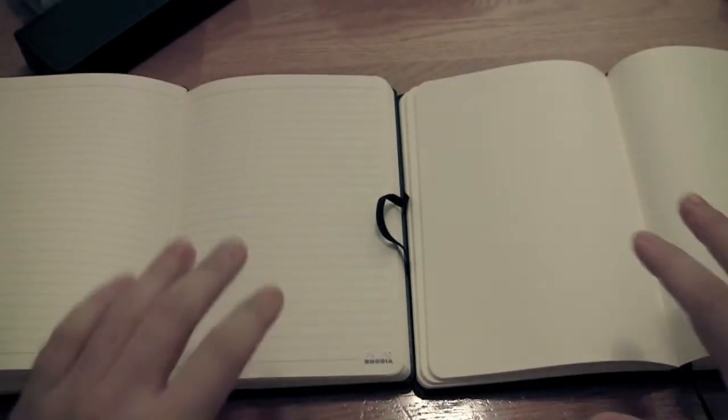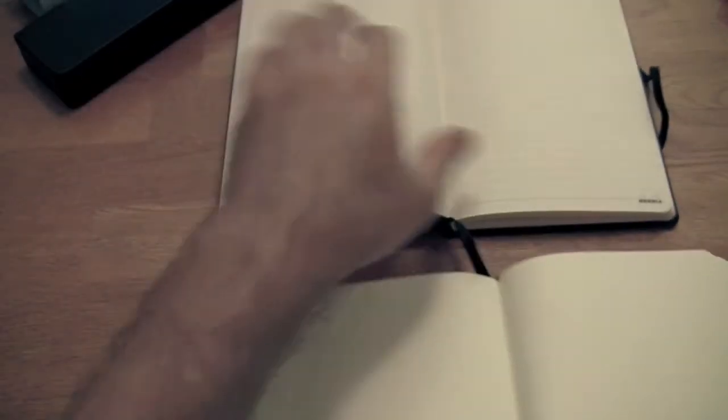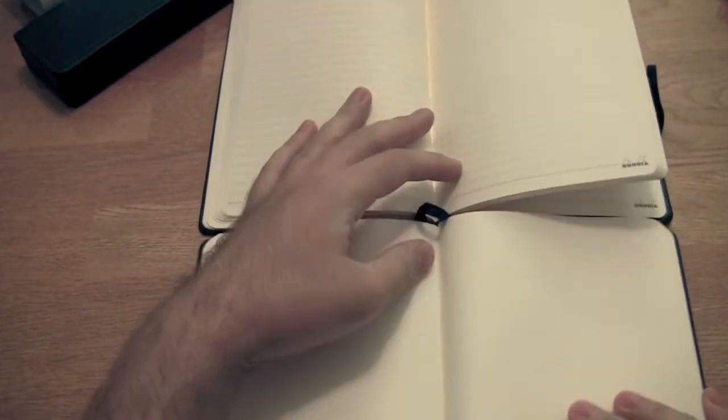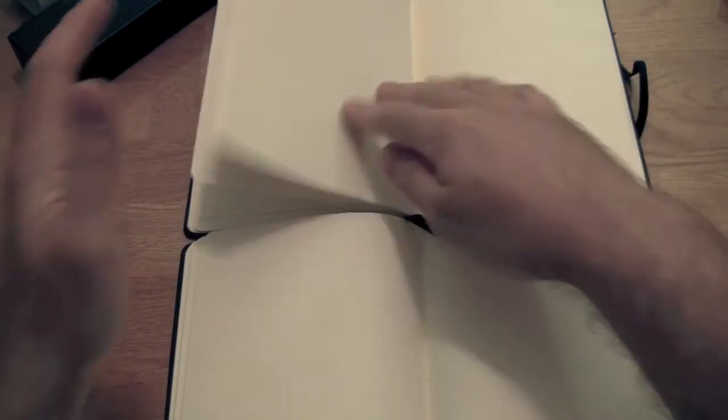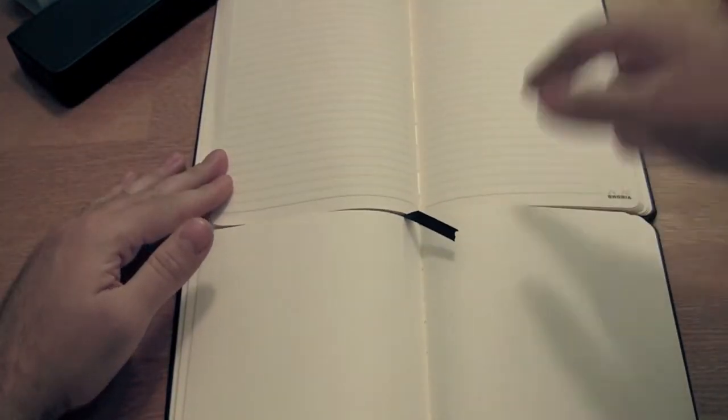But let me see if I can give you a little better scan here. So the biggest difference you have is when you open this binding up to say somewhere around the middle of the book, the difference between how much it lays flat is quite a bit of a difference. This is the old one and this is the new one.